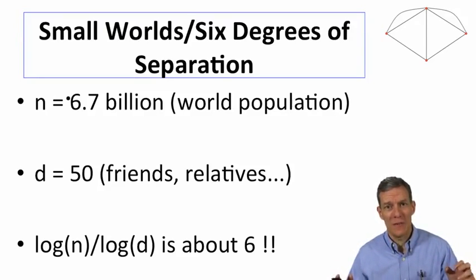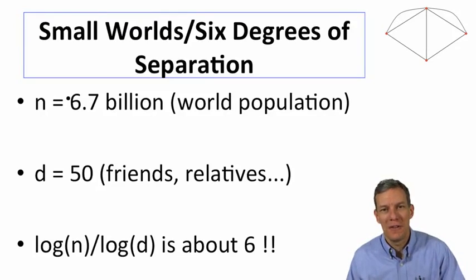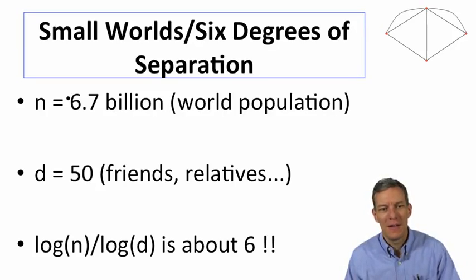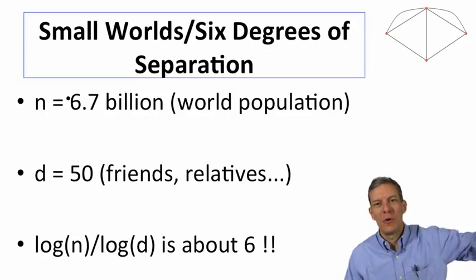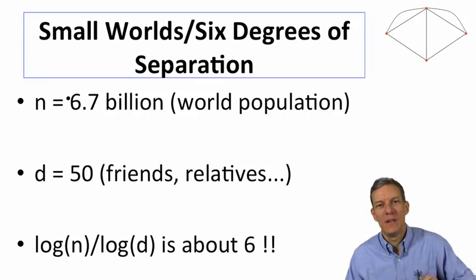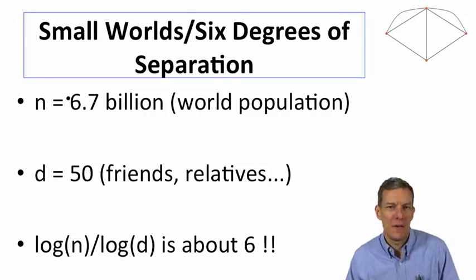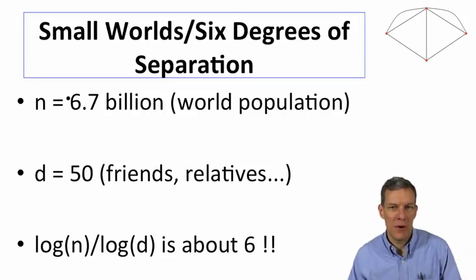So this is the six degrees of separation that is often talked about. The idea that to get from any individual to any other individual in the world, you actually don't need a lot of hops. You can get there fairly efficiently.